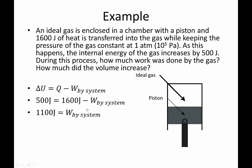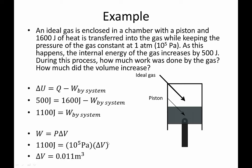So the gas has done 1,100 joules of work if we put in 1,600 joules of heat and only 500 joules of internal energy increase. We can also go back to our constant pressure equation to figure out how much the volume increased. We had 1,100 joules of work done at a constant pressure of 10^5 pascals, and solving for the change in volume gives us 0.011 cubic meters — so it increased in volume by about 11 liters. That's a pretty good size change in volume for this problem.